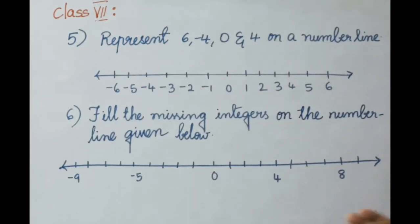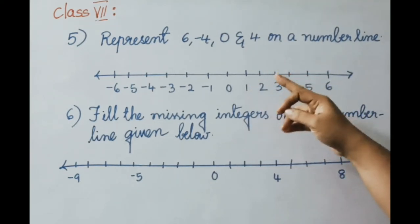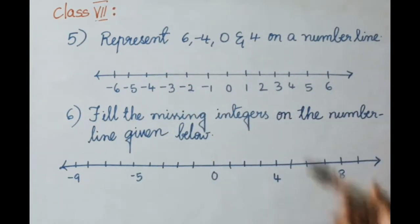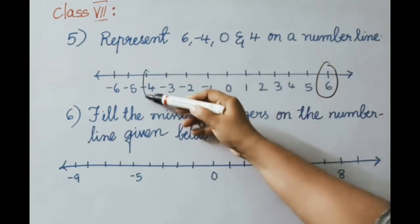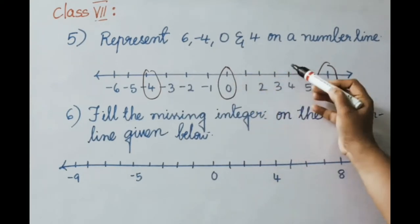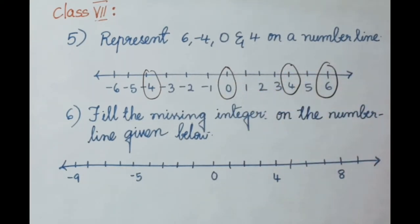See the fifth question. Represent 6, minus 4, 0, and 4 on a number line. We shall take a number line from minus 6 to plus 6. Mark plus 6, then minus 4, 0, and 4 on the number line. We have marked all the required integers on the number line.